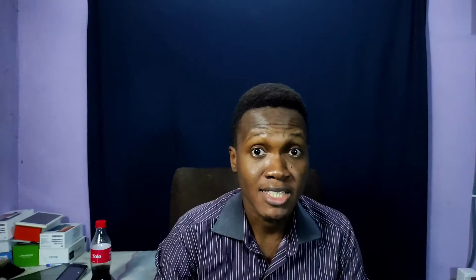The smaller the number, the bigger the aperture size — the bigger the hole. So the Redmi Note 7's aperture of F/1.8 is really, really big. After the aperture size, the next thing you want to look at are the lenses. It uses a standard wide lens, which most main cameras use — there's nothing special there.